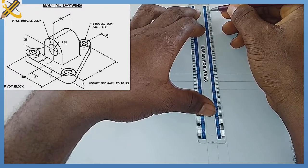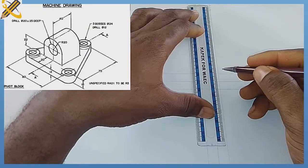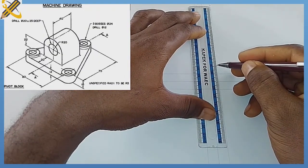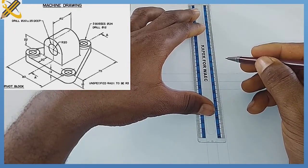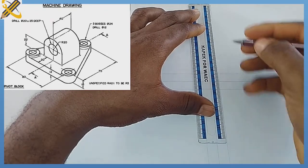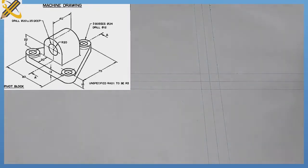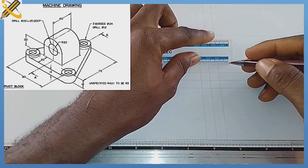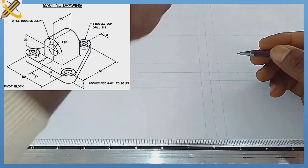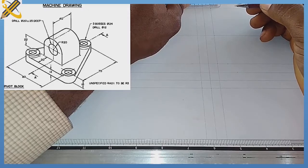From the top I'm measuring 12 millimeters, and from the bottom also 12 millimeters. I'm going to get the midpoint of that 104mm length — half of 104 is 52. I project them horizontally, then from this line I'm measuring 12mm inwards on both sides.